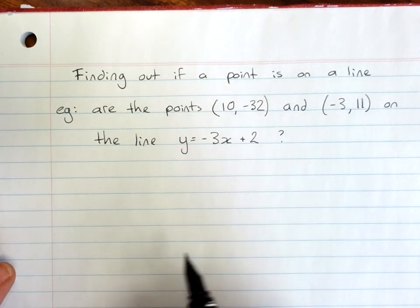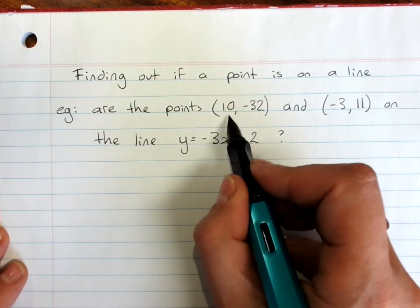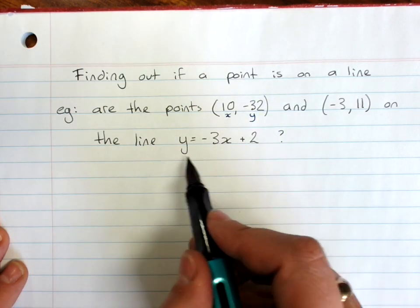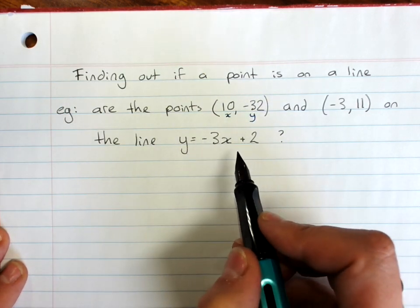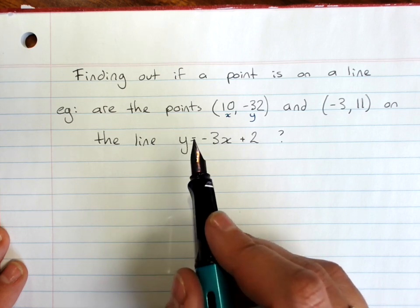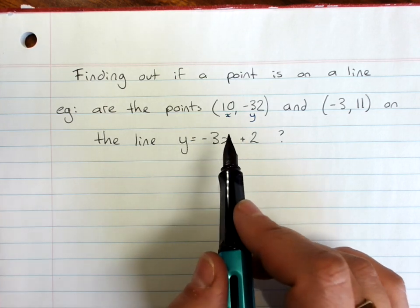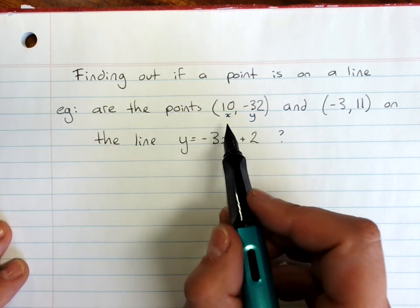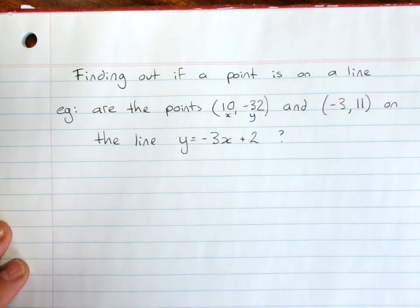The way we solve it is we substitute the x and y values of the point into the rule of the line and see if it works out as true. Now there's actually two ways we can approach it, possibly even three, and I'll just do each one separately.